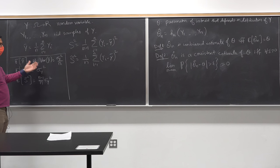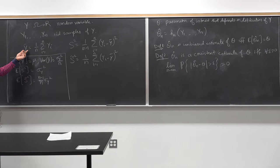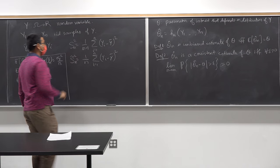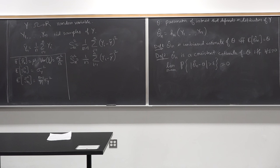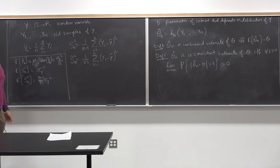Let's apply this. Consider y-bar_n — is it a consistent estimate of mu? As n goes to infinity, will y-bar_n converge to mu with high probability? The answer is yes, and the specific theorem used to show this is the law of large numbers, which we covered on Wednesday. The law of large numbers states that y-bar_n converges to mu with high probability as n goes to infinity.